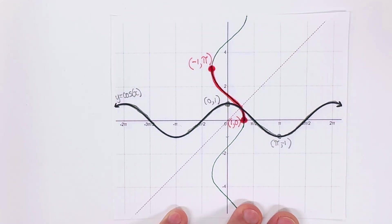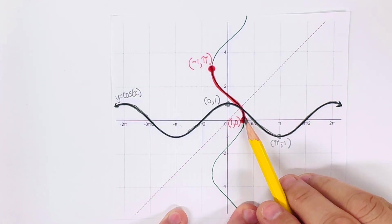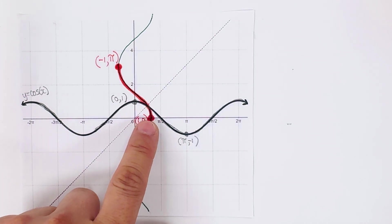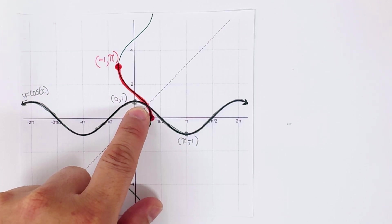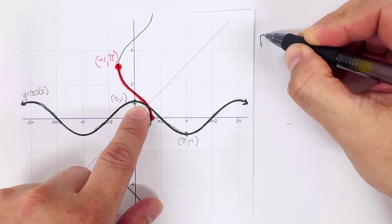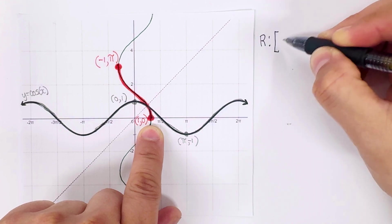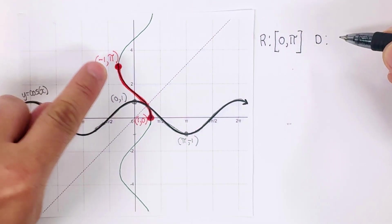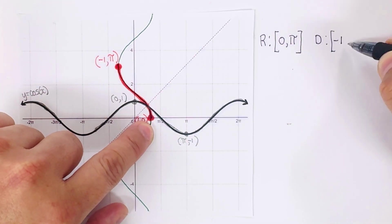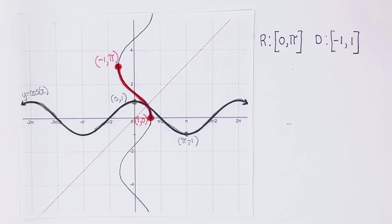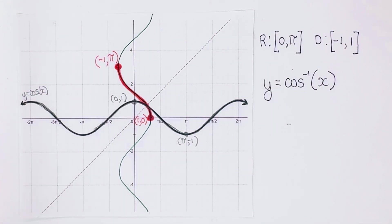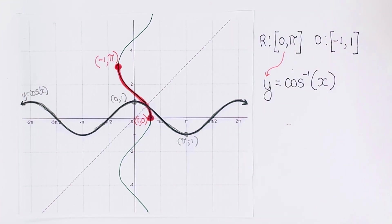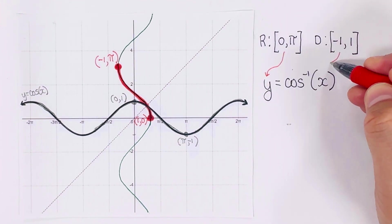From here we can determine the domain and range for y equals arccos of x. Looking at the red graph, the range starts from 0 all the way to pi. The domain starts from negative one all the way to one. So for inverse cosine of x, the output range is from zero to pi, while the x values come from negative one to one.